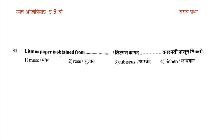Litmus paper is obtained from dot dot. The options are: option 1 is moss, option 2 is gulab (rose), option 3 is hibiscus, and option 4 is lichen. The answer is lichen.